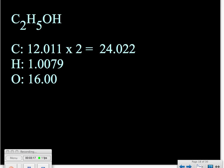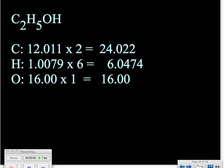Hydrogen is a little trickier because hydrogen appears with a subscript of five, but there is also another hydrogen listed with no subscript, which is assumed to be one. So we have five hydrogens plus one more, for a total of six hydrogens. We multiply six times the atomic mass of hydrogen to find its contribution to the molar mass. The oxygen has no subscript, so there is only one. Now that we have those multiplied out, we can add those numbers together, add the units of grams per mole, and check our significant figures.